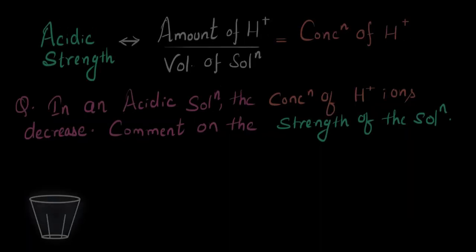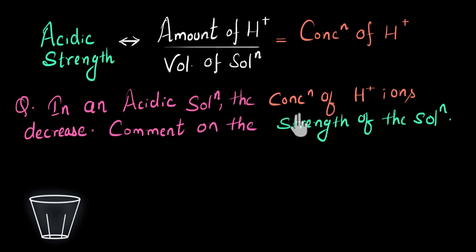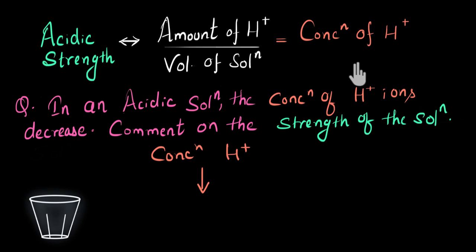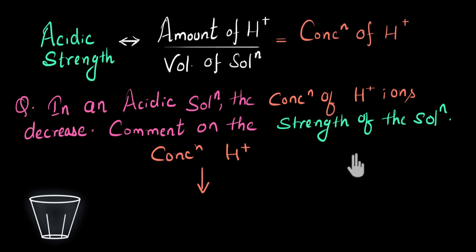One last problem: in an acidic solution, the concentration of H+ ions decreases. Comment on the strength of the solution. The concentration of H+ ions is decreasing, and we have seen that the concentration of H+ ions defines the acidic strength — higher concentration means more acidic, lower concentration means less acidic. So since the concentration of H+ ions is decreasing, the solution is becoming less acidic.